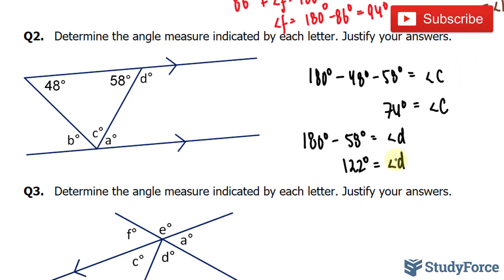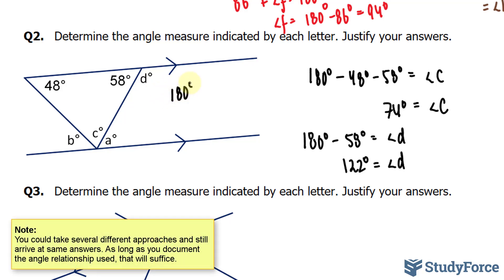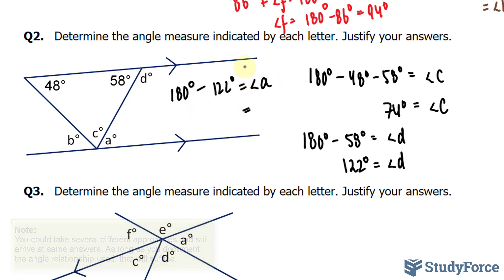The reason why finding D is important is because D and A are co-interior angles, meaning that if you add up D and A, you also get 180 degrees. So I'll take 180 degrees and subtract it from 122, which is what I just found for D, and I should end up with angle A. That will end up giving me 58 degrees.